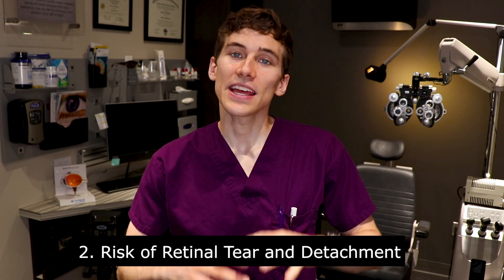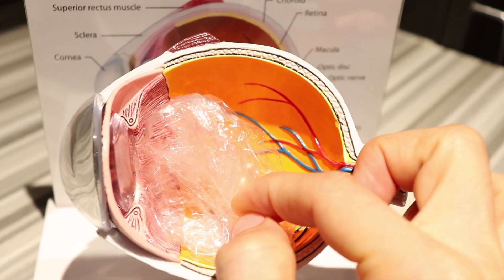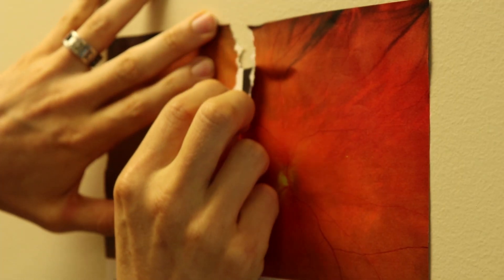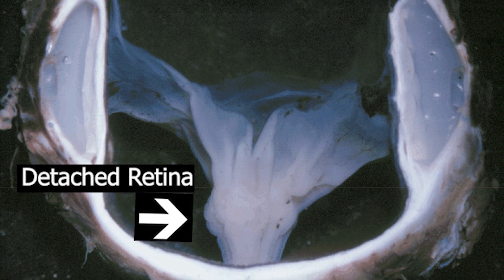That brings us to the second thing everyone needs to know about floaters — the risk of what's called a retinal tear or detachment. The gel inside the eye has an outer layer made of more collagen called the vitreous cortex, which acts like a shell attached to the retina on the back surface of the eye. As that gel degrades and turns more into a liquid, it peels away from the retina and can tug on it, typically at the outer edges first. This acts like pulling a poster off a wall — it can cause a small tear, a complete hole, or even rip the entire retina away from the back of the eye, which we call a retinal detachment. That is a true ocular emergency.